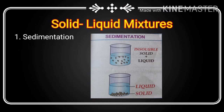Now we discuss the separation of solid-liquid mixtures. The first method is sedimentation. Sedimentation means the settle-down process. It is based on the settling down by gravity of insoluble solid particles in a solid-liquid mixture on standing for some time. The insoluble solid component settles down in a beaker, the liquid collects above it and is poured out. The process of pouring out the liquid such that the solid remains behind is called decantation. An example is sedimentation of impurities in drinking water.